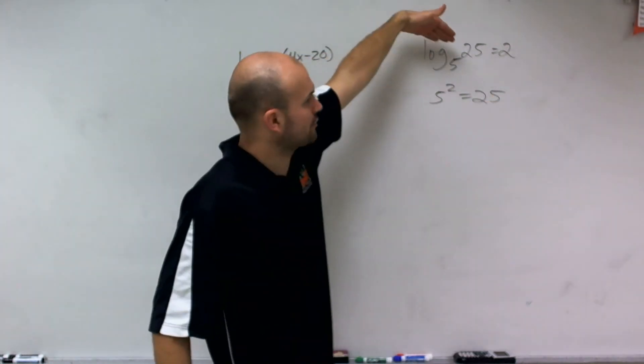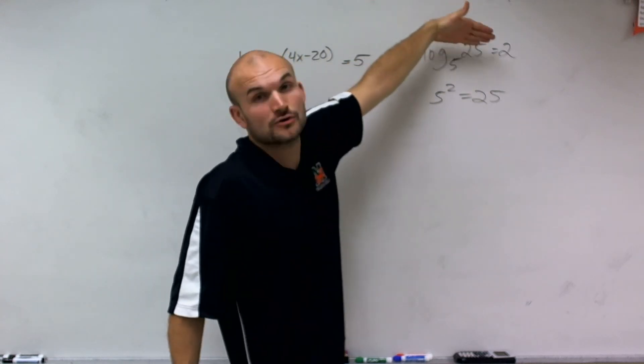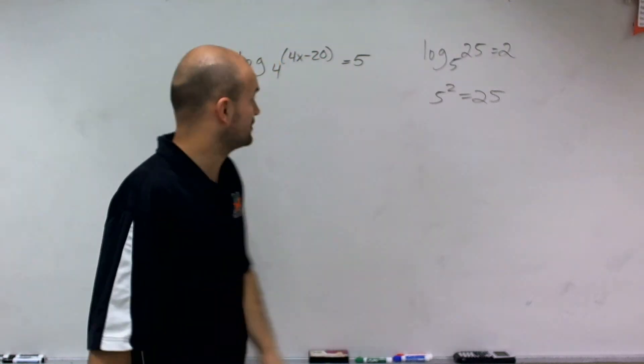And that's exactly what a logarithm is asking. It says log base 5 of 25 really means 5 raised to what power equals 25, which you know the answer is equal to 2.